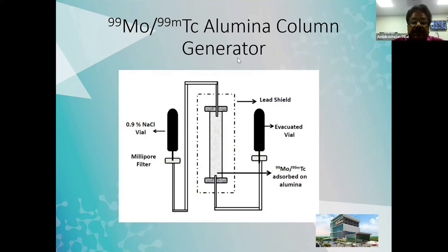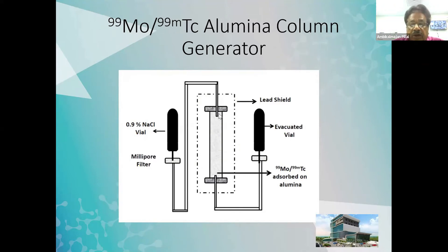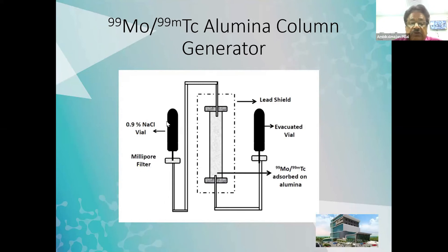What happens in a technetium generator? This is the core component: you have an alumina column. This alumina column is loaded with molybdenum. The molybdenum is absorbed onto the alumina column and will not come out. Then you take a small amount of saline — maybe about 5 ml — and pass it through the column. The pertechnetate will be eluted and you will get pertechnetate ready for your nuclear medicine studies.